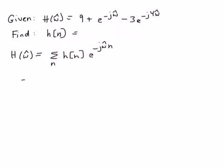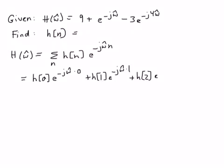And so I'm just going to go ahead and write out a few terms in this sum so that we can get the pattern. So that would be h of 0 e to the minus j omega hat times 0 plus h of 1 e to the minus j omega hat times 1 plus h of 2 e to the minus j omega hat times 2 plus etc. Right, this summation would continue forever.